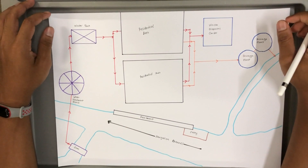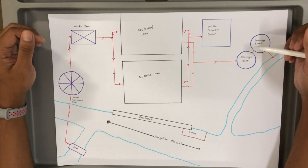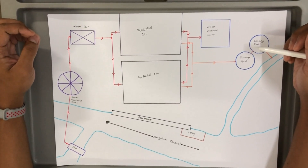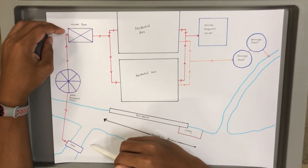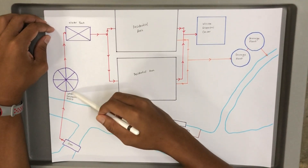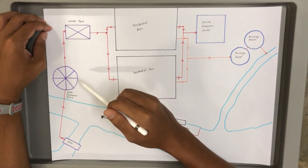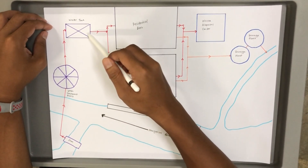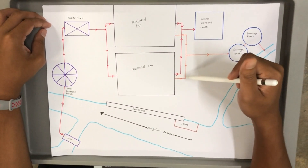Let me briefly explain how all four subfields of civil engineering are related. Near a river, a dam was built on high ground suitable for water catchment. Water from the river flows to a water treatment plant built near the dam for processing and supplying local residents. The treated water is delivered to a water tank and then distributed to the residential area for domestic use.